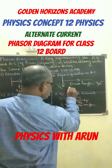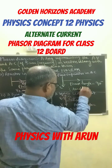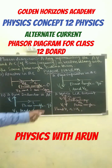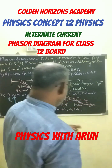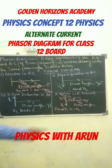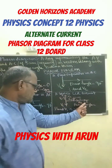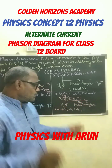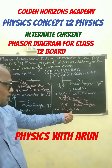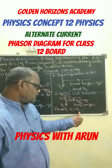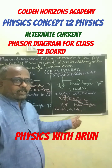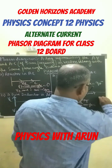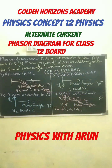I leads Vc. But next is a series LCR circuit. You can see very well here that I is leading V — when capacitance ka jo resistance hain, it is greater than the resistance of the inductance. So these are the four cases you must know very well.